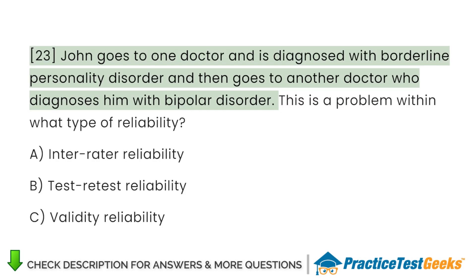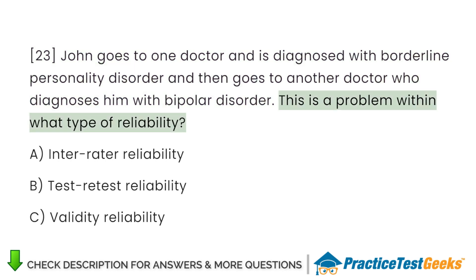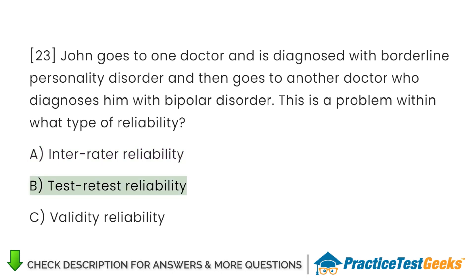John goes to one doctor and is diagnosed with borderline personality disorder, and then goes to another doctor who diagnoses him with bipolar disorder. This is a problem within what type of reliability? A. Interrater reliability B. Test-retest reliability C. Validity reliability